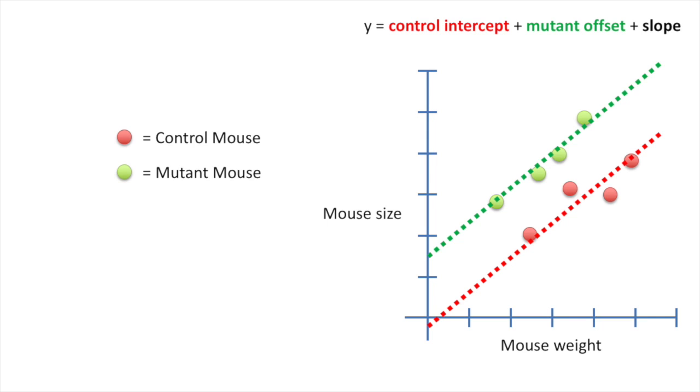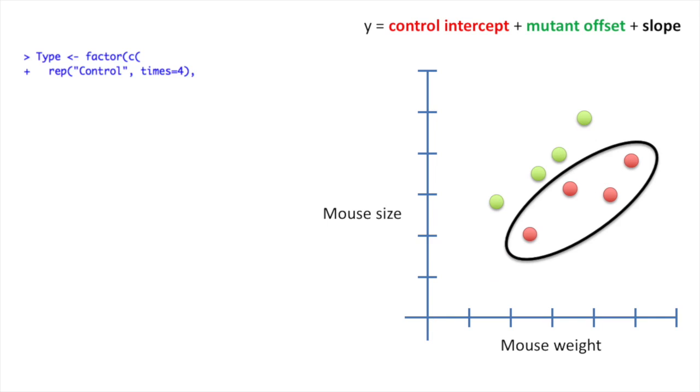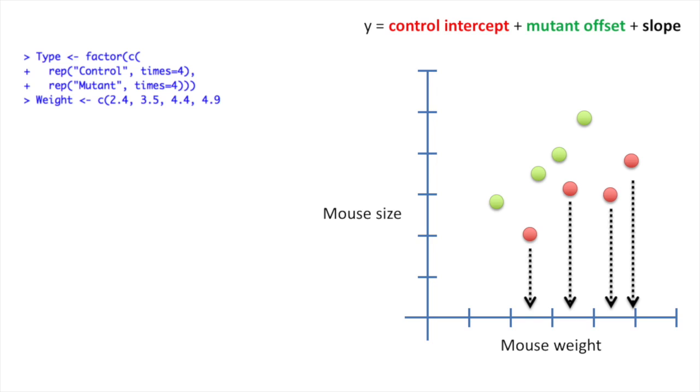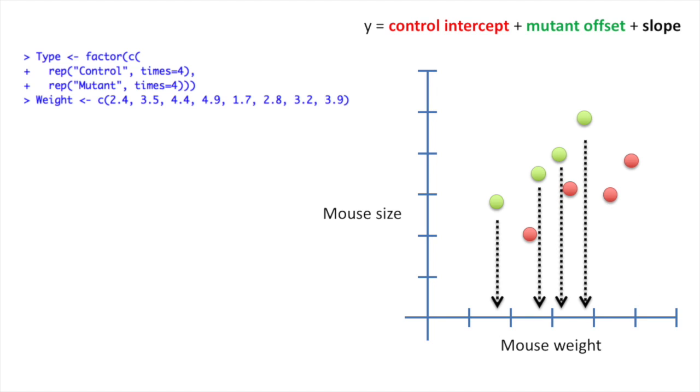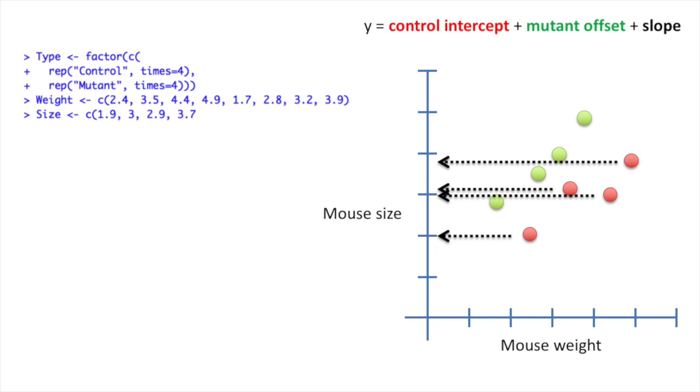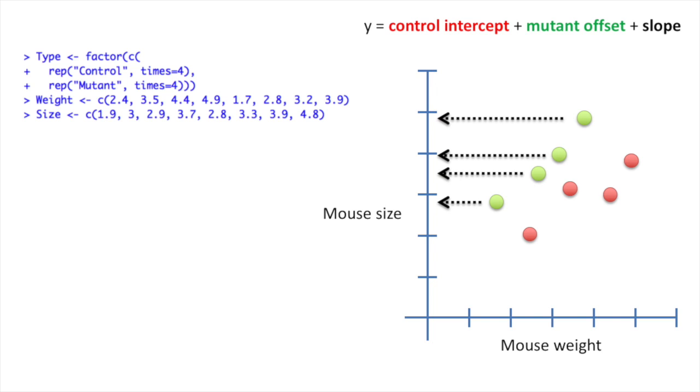Now let's see how we can test the hypothesis that there's no difference between control mice and mutant mice using R. The first thing we do is create labels for the control mice, then create labels for the mutant mice. Now we enter the weights for the control mice, followed by the weights for the mutant mice. Now we add the size measurements for the control mice, followed by the size measurements for the mutant mice.